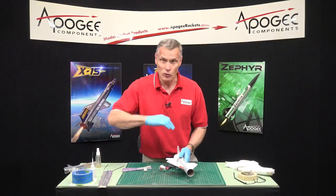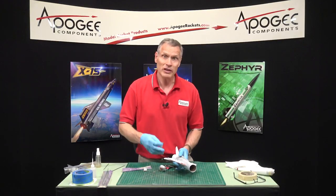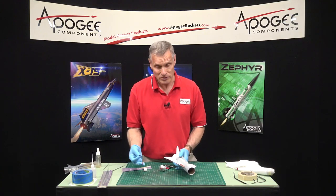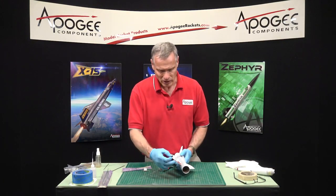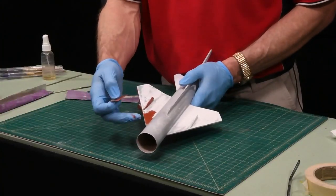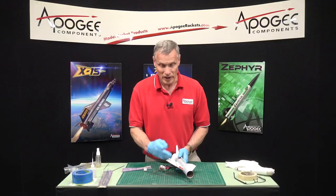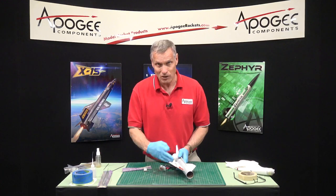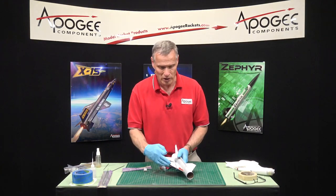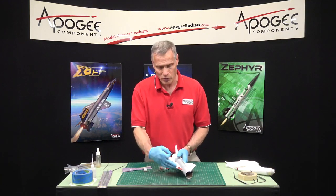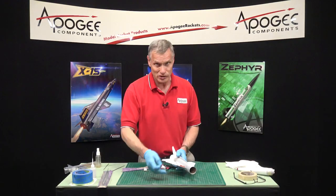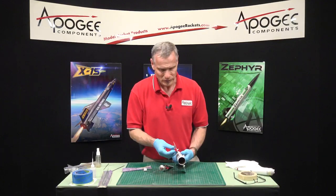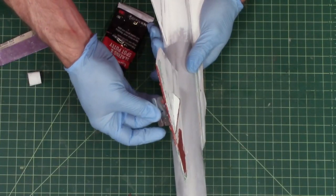Normally on fins you round the edges to make the rocket fly faster and higher. On this particular kit, I know it's got a silver leading edge, so it's easier to mask that off and paint it if it's nice and square. That's why I want it square on this particular rocket.